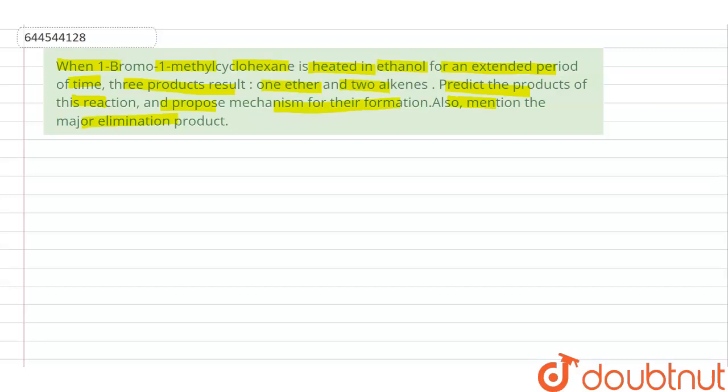What is asking here: when we react 1-bromo-1-methylcyclohexane with ethanol then we get one ether and two alkenes. We have to tell which are these products and we have to draw their mechanism.